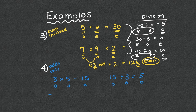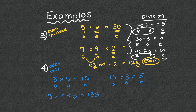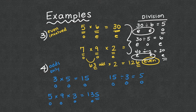What if we did 5 times 9 times 3? Five times nine is 45, times three gives me 135 — again, odd. So odd times odd times odd equals odd. With multiplication, the one guarantee when you have odd numbers is that if it's only odd numbers, everything is going to be odd every time.